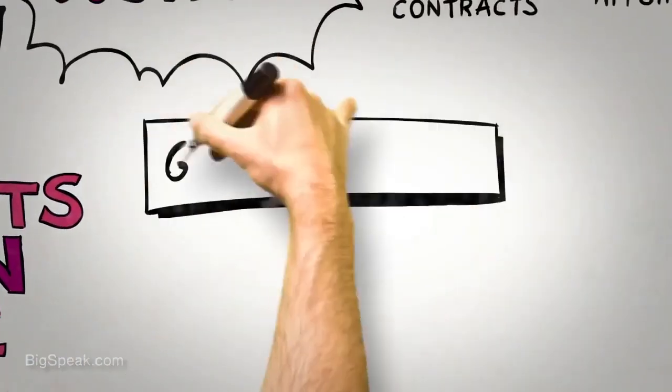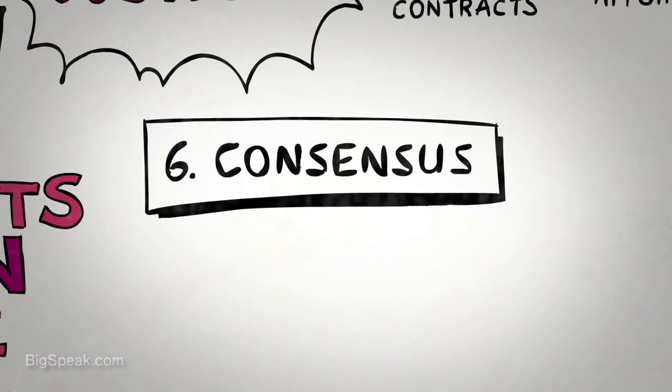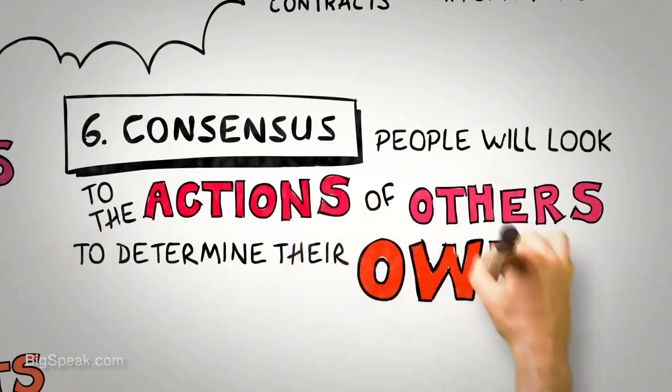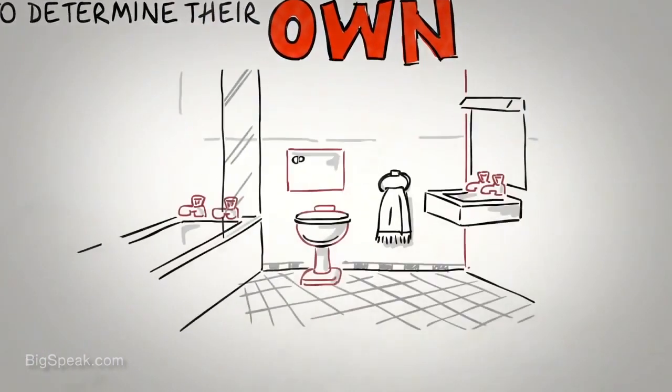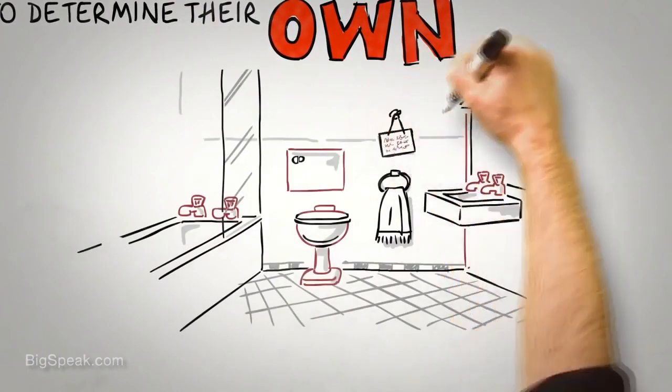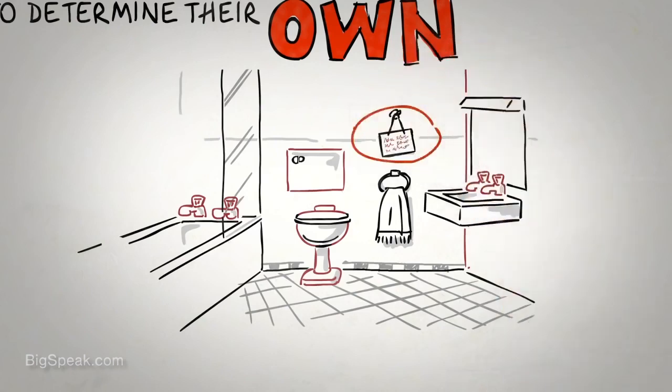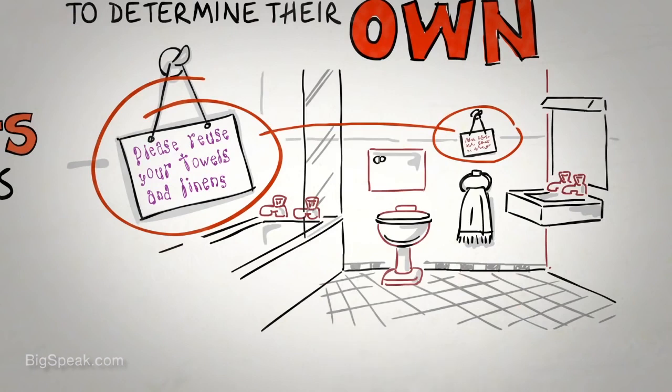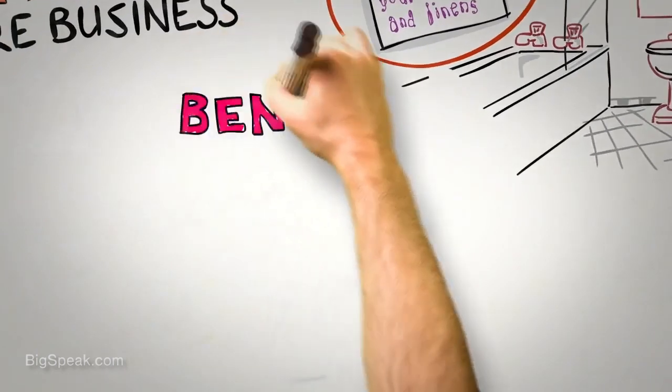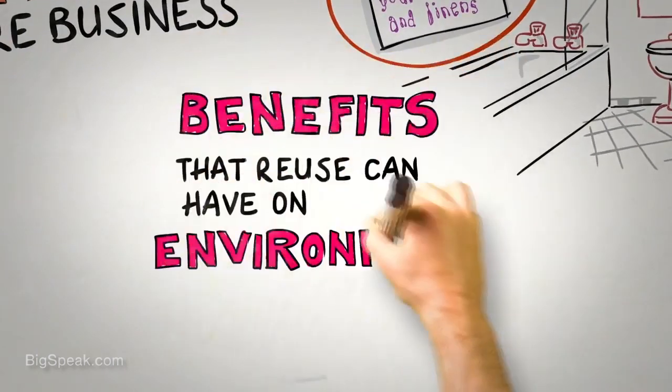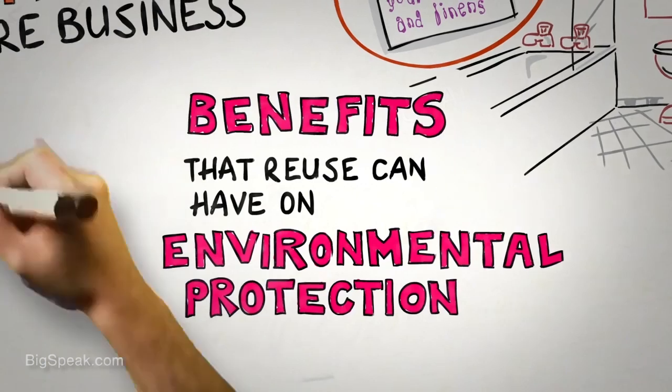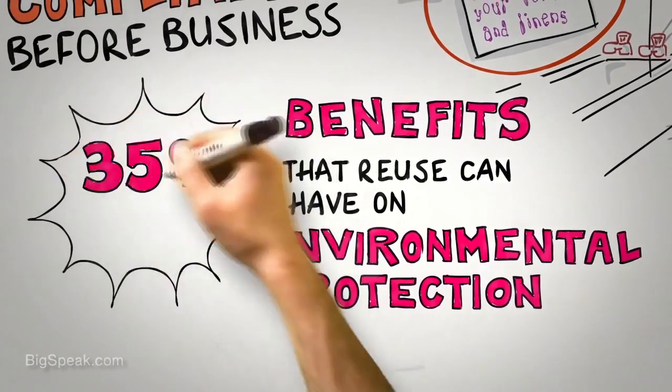The final principle is consensus. Especially when they are uncertain, people will look to the actions and behaviors of others to determine their own. You may have noticed that hotels often place a small card in bathrooms that attempt to persuade guests to reuse their towels and linen. Most do this by drawing a guest's attention to the benefits that reuse can have on environmental protection. It turns out that this is a pretty effective strategy, leading to around 35% compliance.